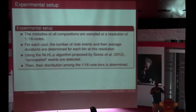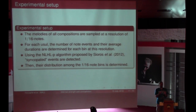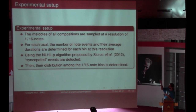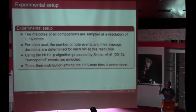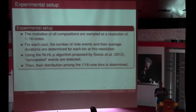So imagine you have a rhythmic cycle divided into 16th notes — we count the onsets in each of these bins and also register how long the durations are in each bin. We also applied one algorithm, which we now propose in ISMIR, for measuring syncopation or for detection of syncopated events. I will not go into detail of this algorithm because it takes too long to explain, but you can refer to the paper. We will look at the distribution of syncopated events along the rhythmic cycle to see if there is something systematic or interesting going on.